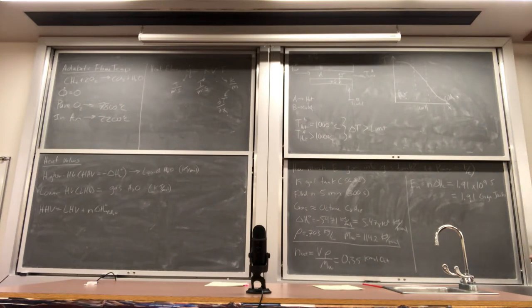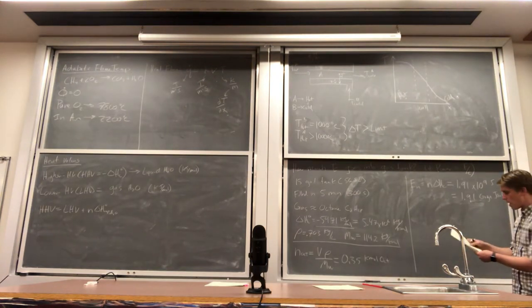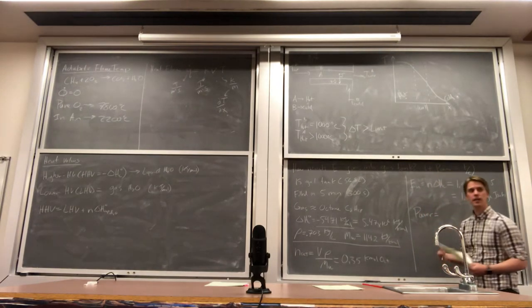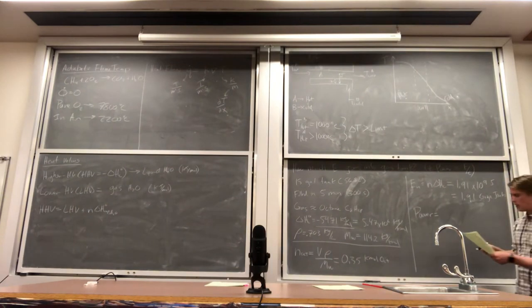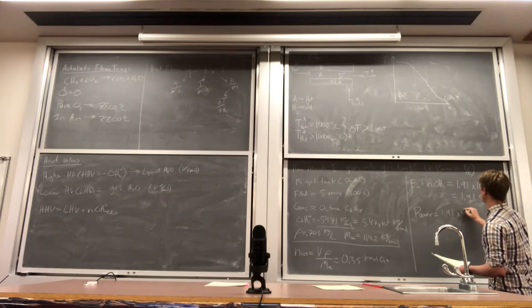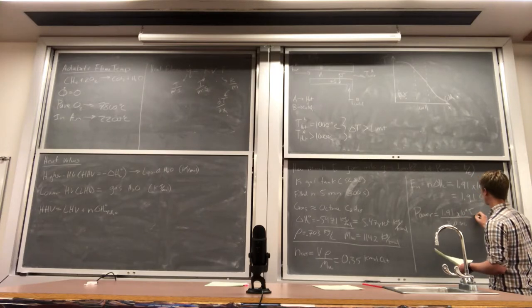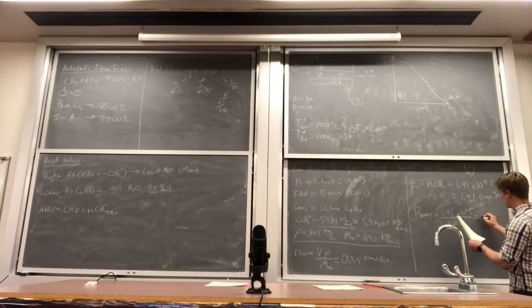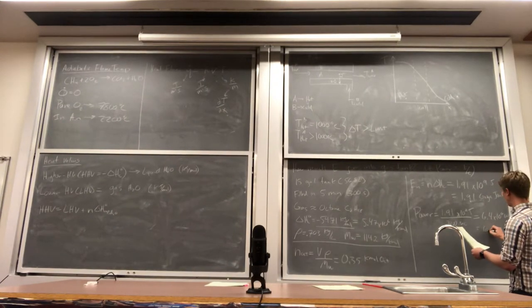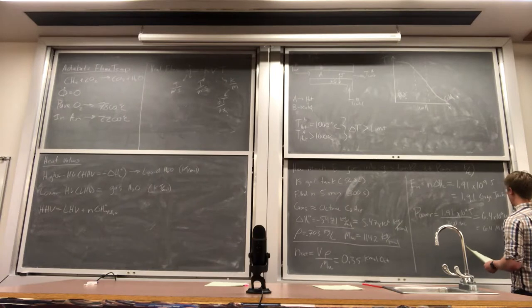Have we taken into account the time it took? Like this isn't a mole-flow rate. This is the total number of moles. So that's what I do right now. So the power, right, the rate of energy that we're putting into the system is going to be our 1.91 times 10 to the 9 joules divided by 300 seconds and we get out 6.4 times 10 to the 6 watts, which is equal to 6.4 megawatts.